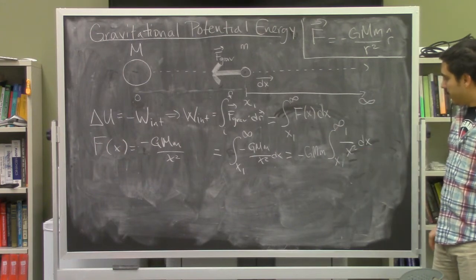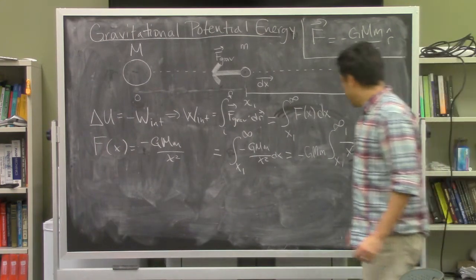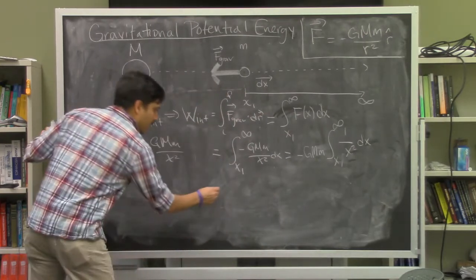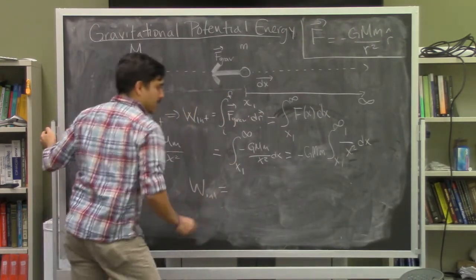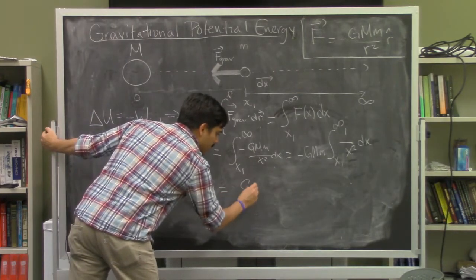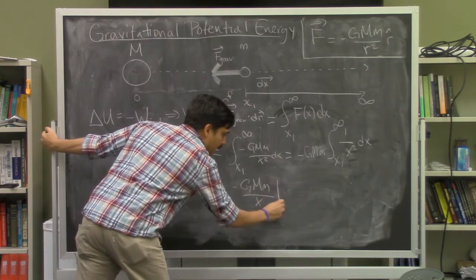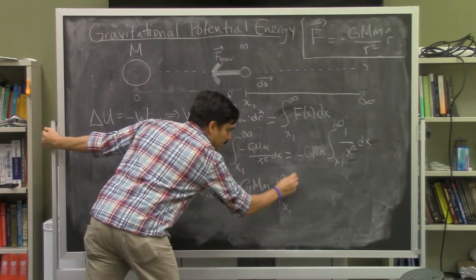The integral of 1/x² is -1/x. So the internal work is W = [-GMm/x] evaluated from x₁ to infinity.